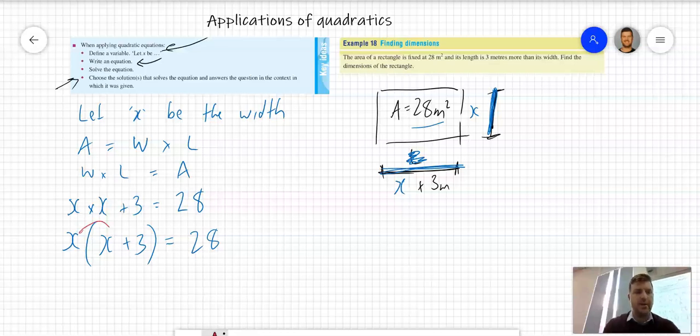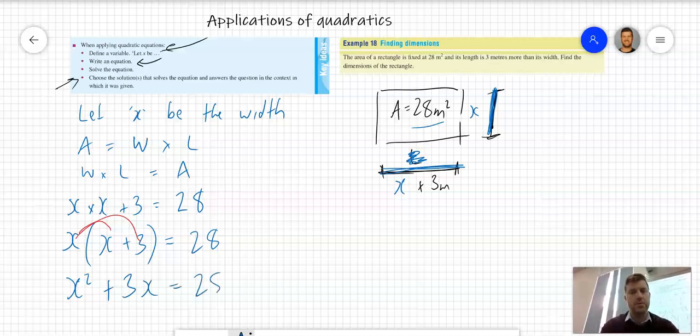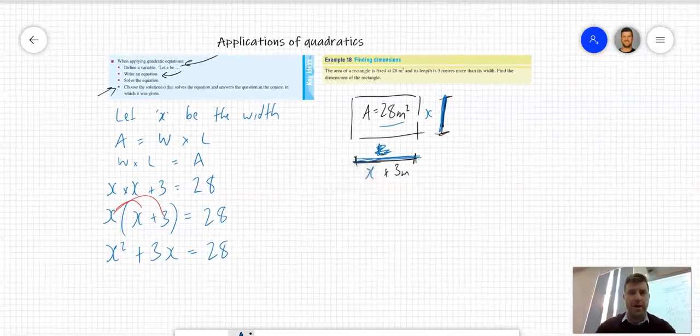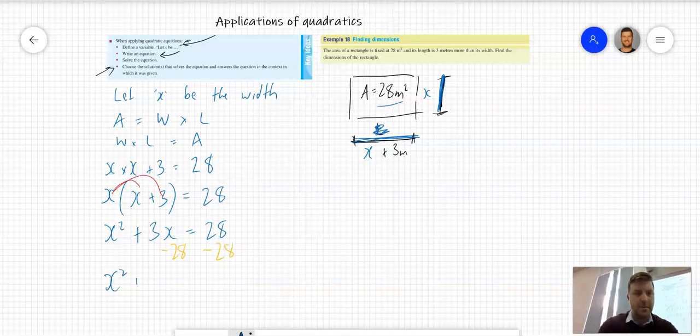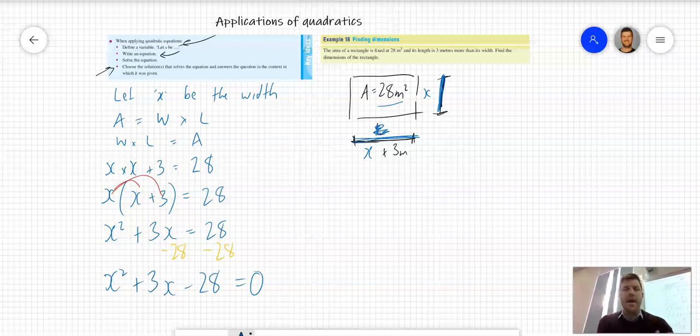When we were solving quadratic equations using the null factor law, the right-hand side of the equation was equal to zero. I can rearrange this so the right-hand side equals zero. Taking 28 from both sides, I now have: x² + 3x - 28 = 0.